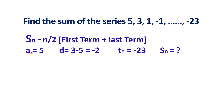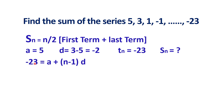We have A equals 5, common difference D equals 3 minus 5 equals minus 2, and the last term Tn equals minus 23. Applying in the formula: minus 23 equals A plus N minus 1 into D, so minus 23 equals 5 plus N minus 1 into minus 2. Taking 5 to the left side: minus 23 minus 5 equals N minus 1 into minus 2.